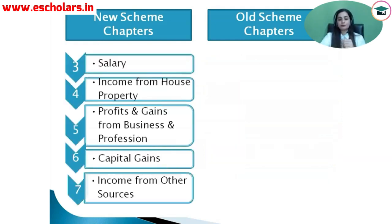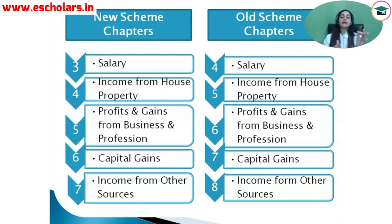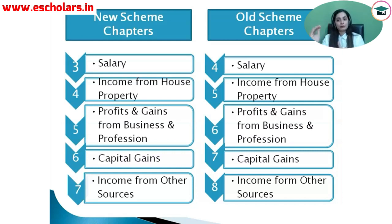Let's see the further portion. If we talk about the old scheme, in module 2 we have five heads of income: salary, income from house property, profit and gains from business and profession, capital gains, and income from other sources. If we look at the new scheme chapters, there are also five chapters — salary, income from house property, profit and gains from business and profession, capital gains, and income from other sources — covering the five heads of income.